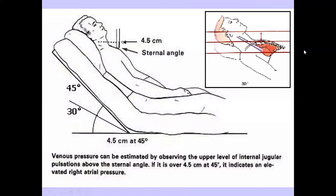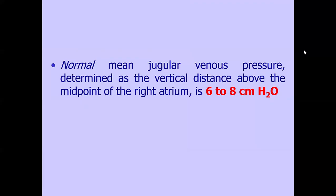Position the patient at a 30 to 45 degree angle. Place a ruler at the sternal angle and measure the highest pulsation. Normally, the height is 4.5 cm above the sternal angle. Above that indicates elevated venous pressure. The normal mean jugular venous pressure as the vertical distance above the midpoint of the right atrium is 6 to 8 cm of water.